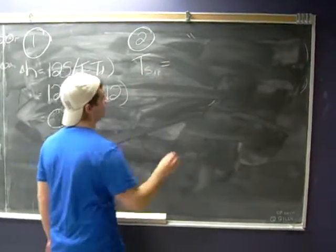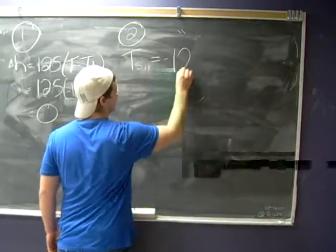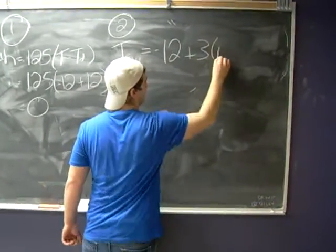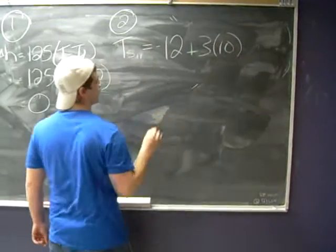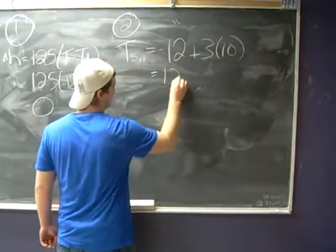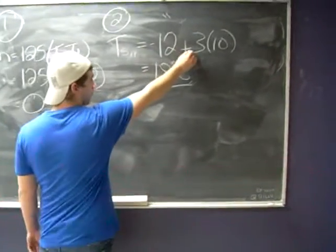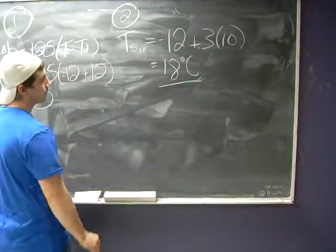For this, we use the equation of minus 12 for our temperature, plus 3 times 10, giving us a temperature of 18 degrees. The main reason we're using addition here instead is because we're actually going down the mountain, rather than climbing.